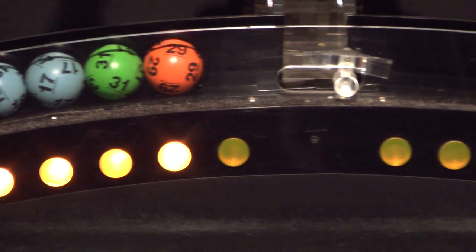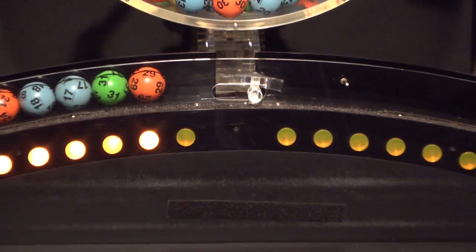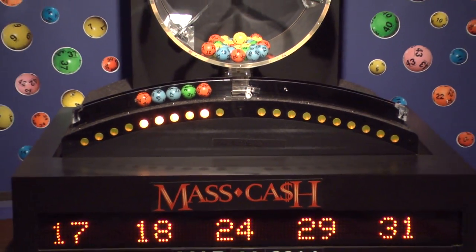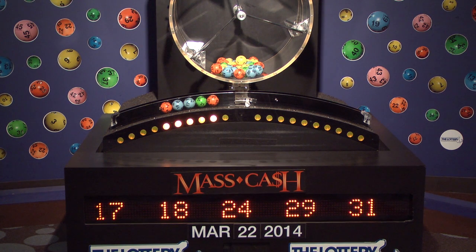Once again, the winning Mass Cash numbers for Saturday, March 22, are 17, 18, 24, 29, and 31. Remember to log on to MassLottery.com to watch all the Mass State Lottery's drawings.